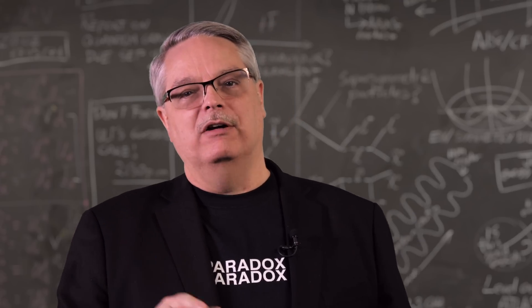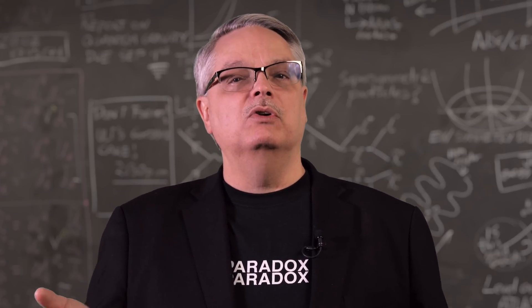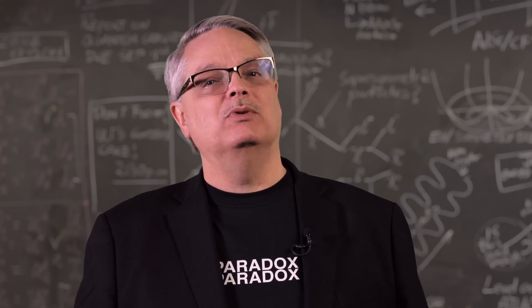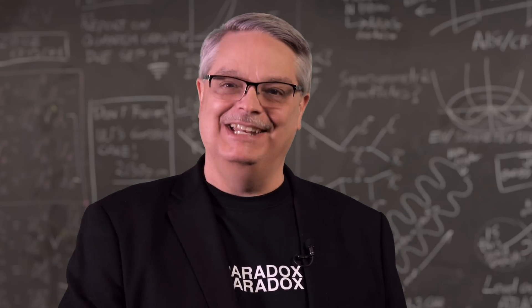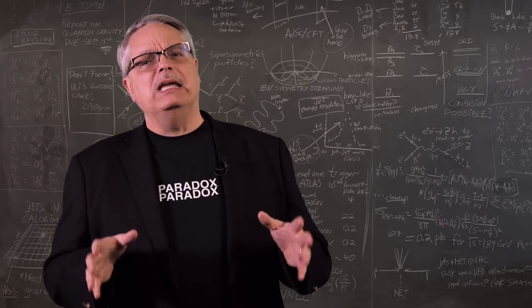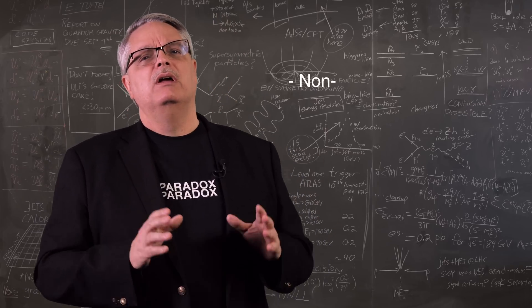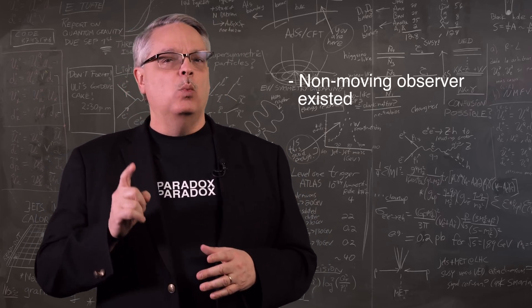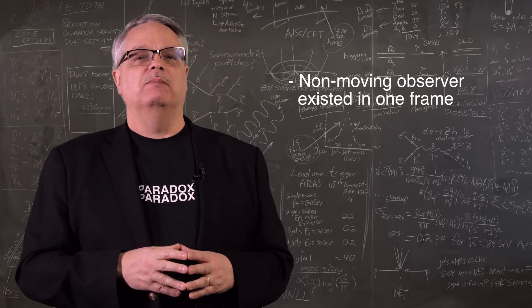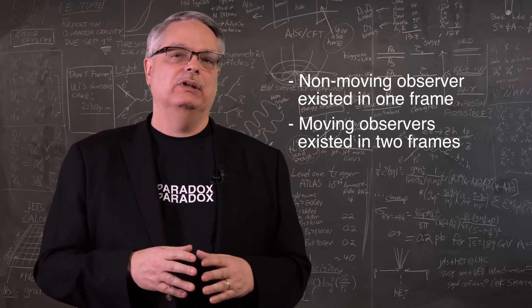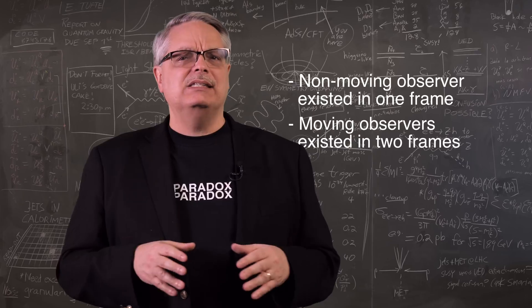So that gets us back to the paradox thing. If you can't know who is moving and who isn't, what I've done here doesn't seem to have solved the mystery. But it has. Forget the math and focus on one crucial difference. Observer A existed in one and only one reference frame. The moving observers existed in two. That's the only difference.